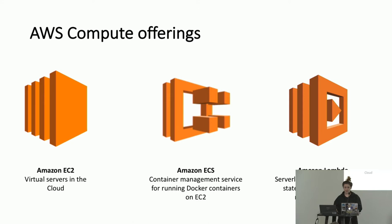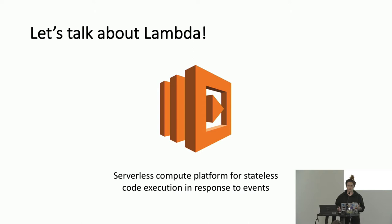ECS is a container management service for running Docker containers on EC2 — we gave a couple of sessions about that last week. Today we're talking about Lambda: a serverless compute platform for stateless code execution. You run your code in response to events. Those events can come from a bunch of different places, usually other AWS services like Kinesis, DynamoDB, or S3. You can run your Lambda function in response to those events without worrying about the underlying infrastructure.